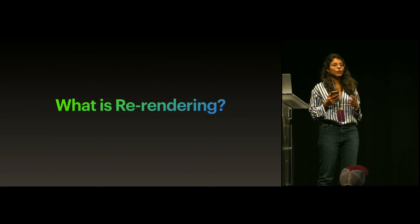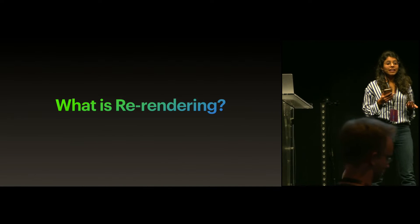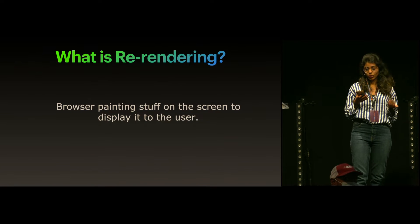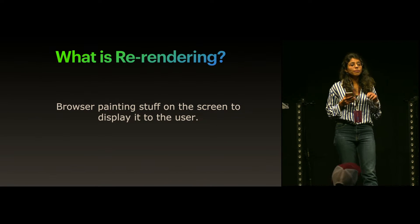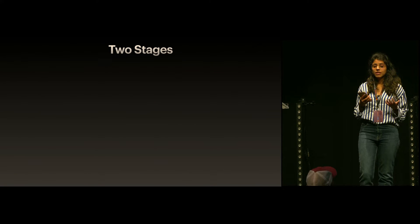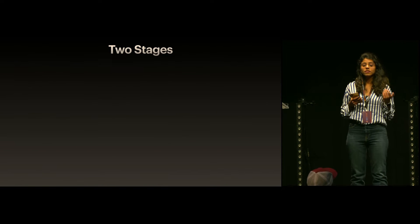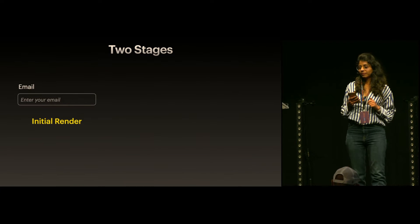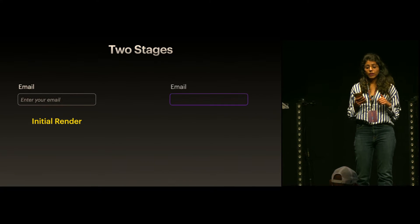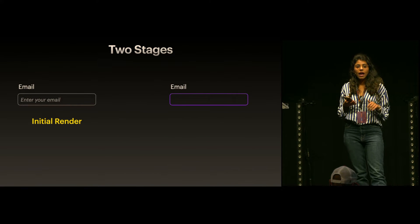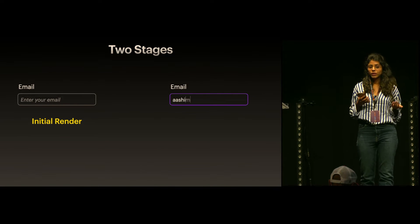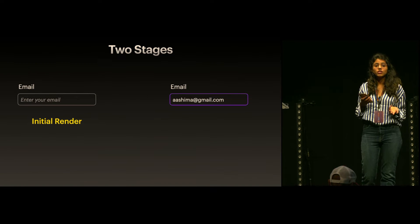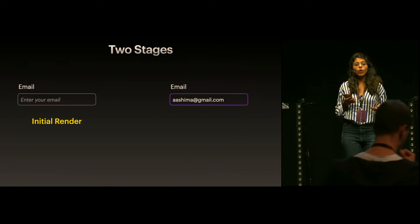First let's talk about what rendering is. Rendering is when the browser paints a bunch of stuff on the screen to display it to the user. Now there can be two stages. First is when the component appears on the screen for the very first time — this is what we call initial render. The other is when the component was already on screen and the user interacts with it, causing the browser to repaint it. This is what we call re-render.